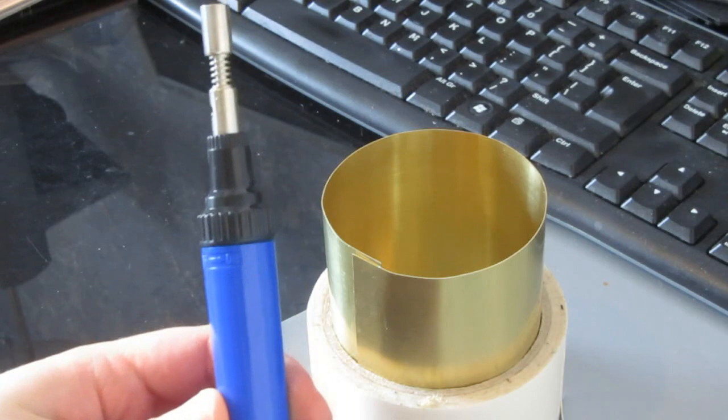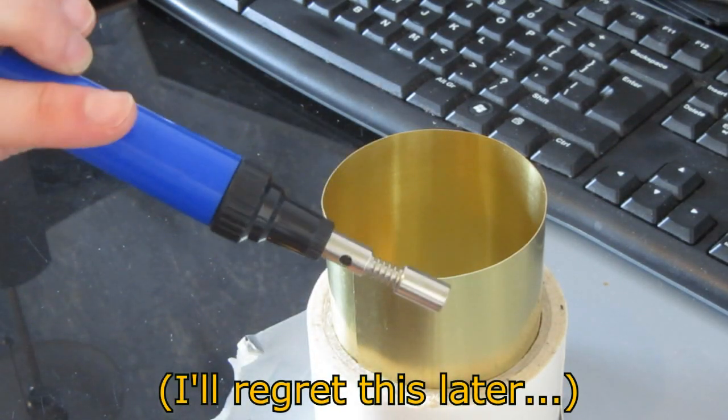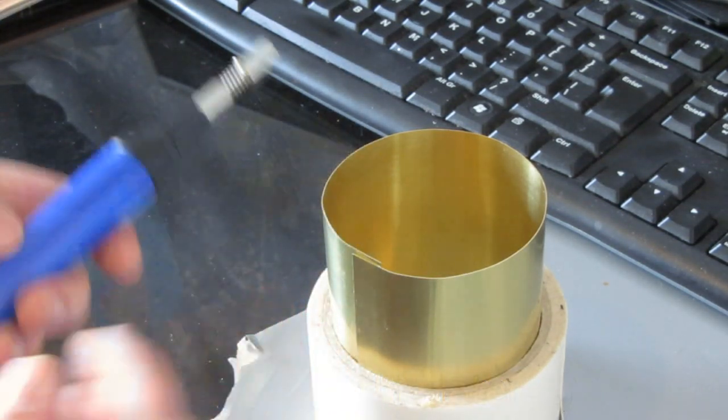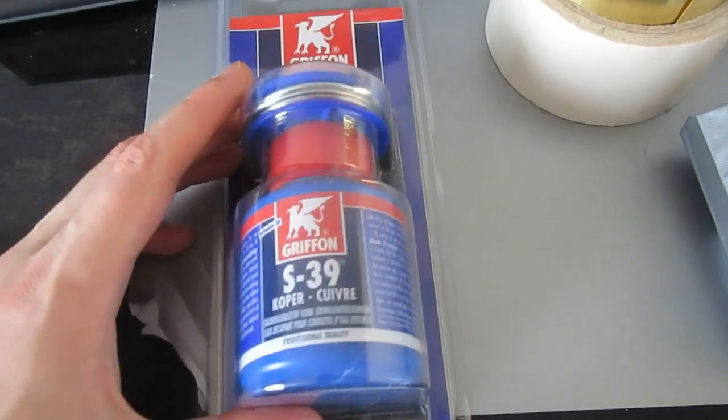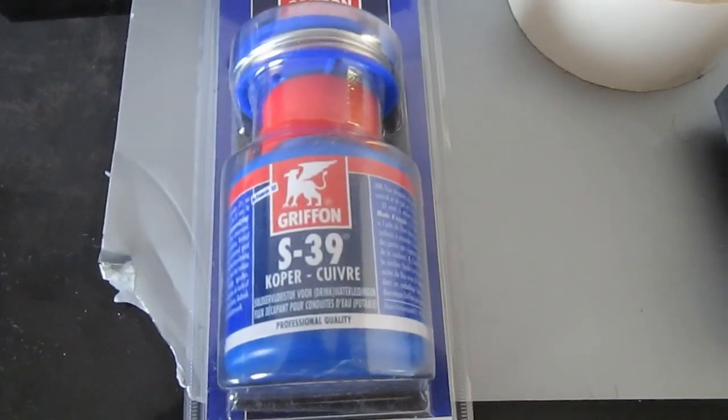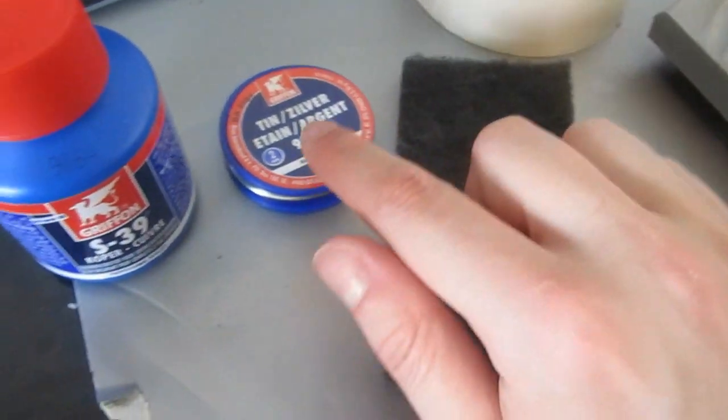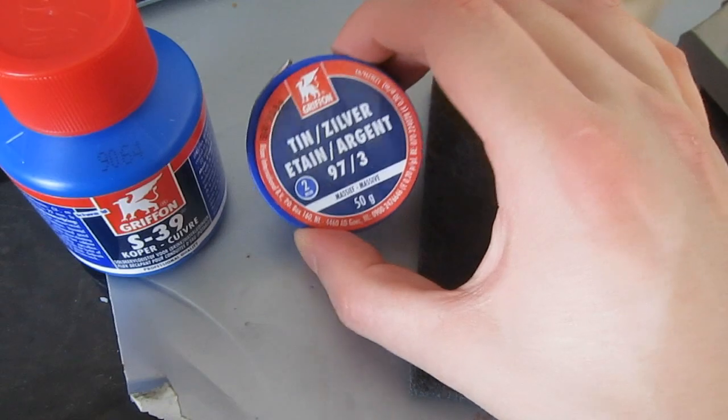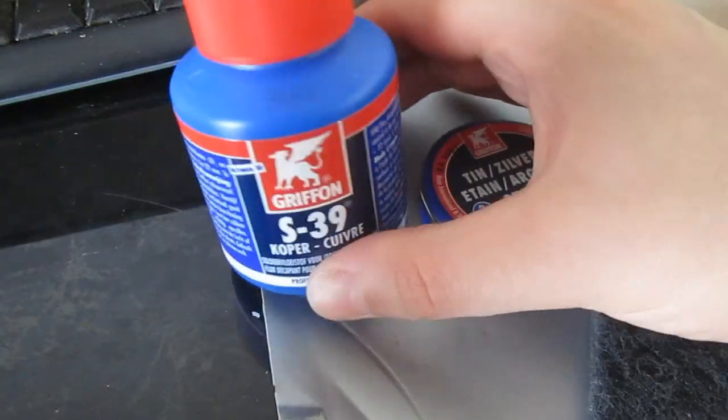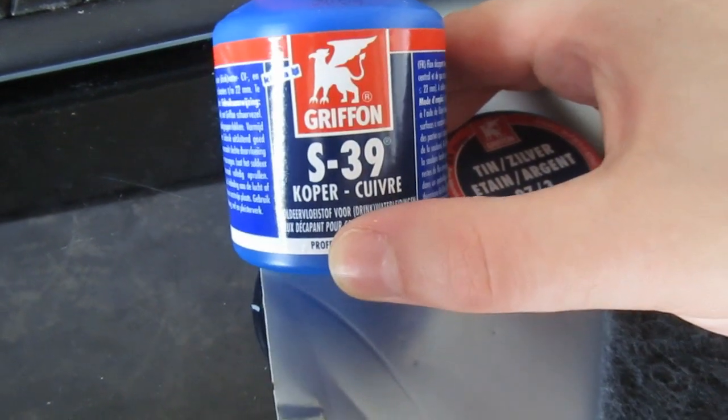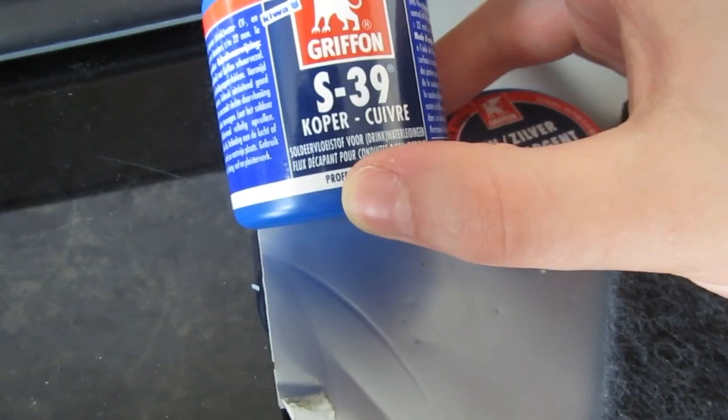Here's the cheap gas burner I bought from Gamma. It's cheap, but it should get the job done. And here's the Griffon soldering set that I bought. It comes complete with cleaning pads, a roll of solder for copper and brass soldering, and the flux to make the solder flow properly through capillary action.